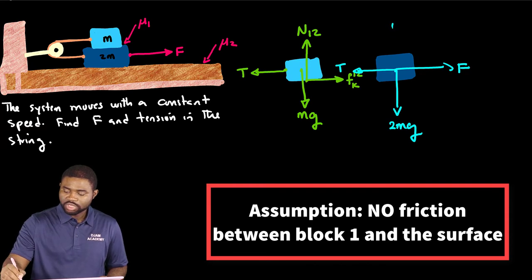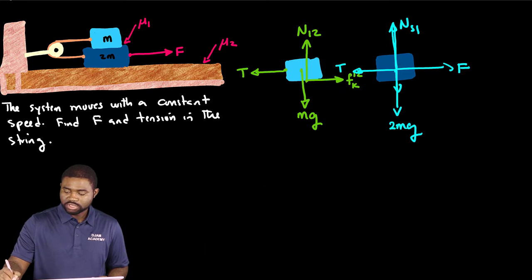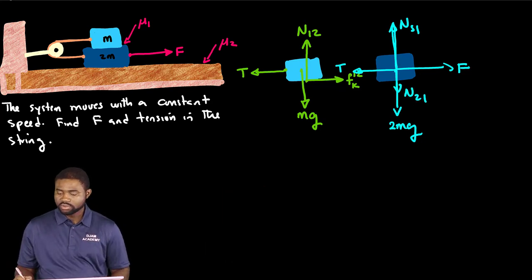So another way for us to represent this is just to add here. This is Ns1. And this is N21.